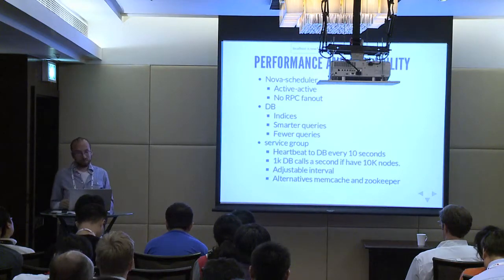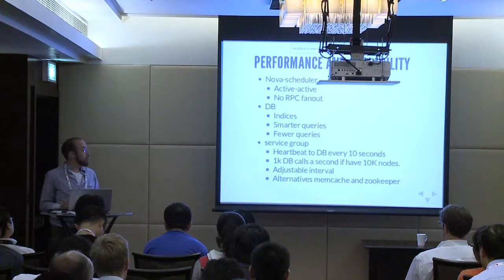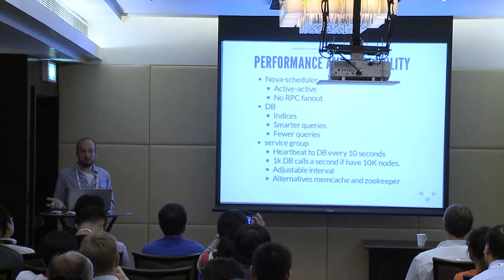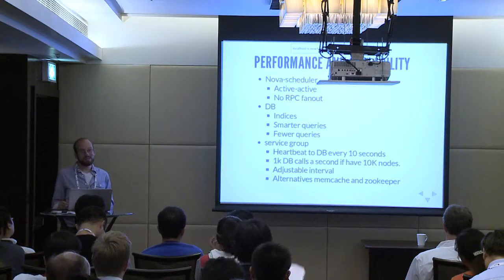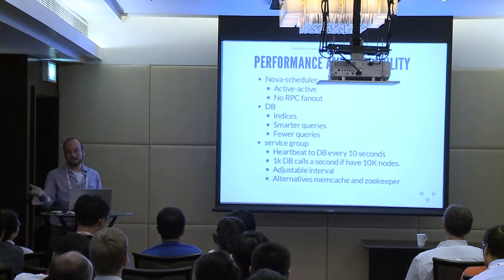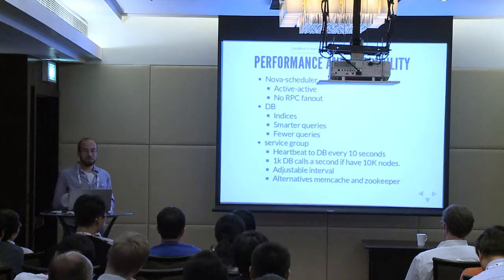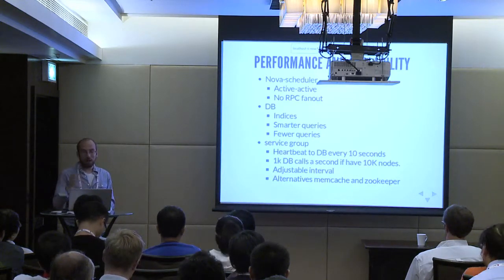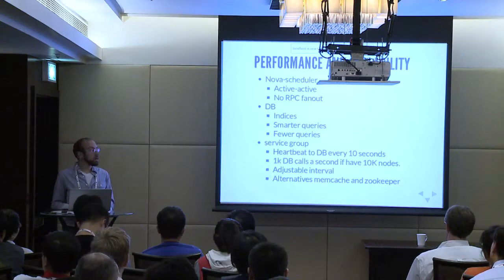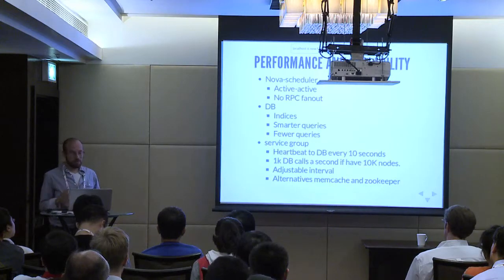Another example is the service group. By default, OpenStack services write to the database every ten seconds saying they're alive. But writing to the database every ten seconds isn't great — with 10,000 nodes, that's 1,000 database calls every second, which is a lot of overhead for a small thing. We've added an adjustable interval, so maybe you want five-minute intervals instead. Or you could use things like Memcache or Zookeeper, because this data is mostly ephemeral anyway. We don't test these by default, so they hopefully work — but that's something we need to test going forward. This has been a big help for making things scale a little easier.